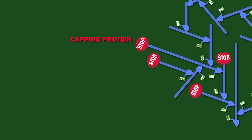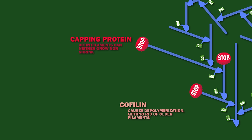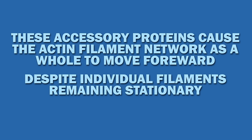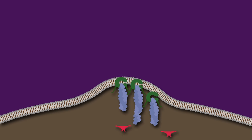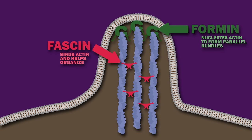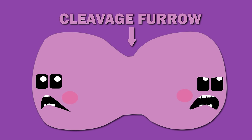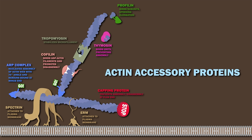At the leading edge, actin filaments become capped by capping protein, which means they can neither grow nor shrink. Meanwhile, cofilin causes depolymerization, getting rid of older filaments. This causes the actin filament network as a whole to move forward, despite individual filaments remaining stationary. Actin filament nucleation can also be triggered by formins. However, the actin filaments nucleated by this accessory protein are not branched; instead, the filaments form parallel bundles. These parallel bundles form, for instance, during cell division, forming the cleavage furrow that helps two daughter cells pinch off. Actin has many, many accessory proteins — these are just a few of the most important ones.